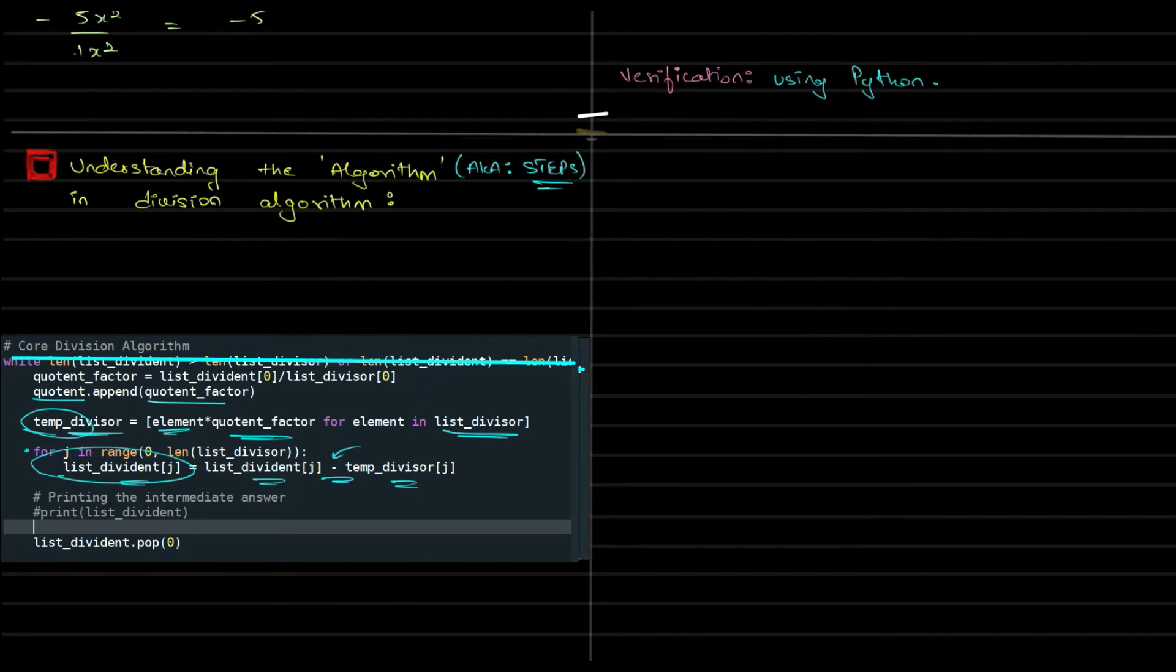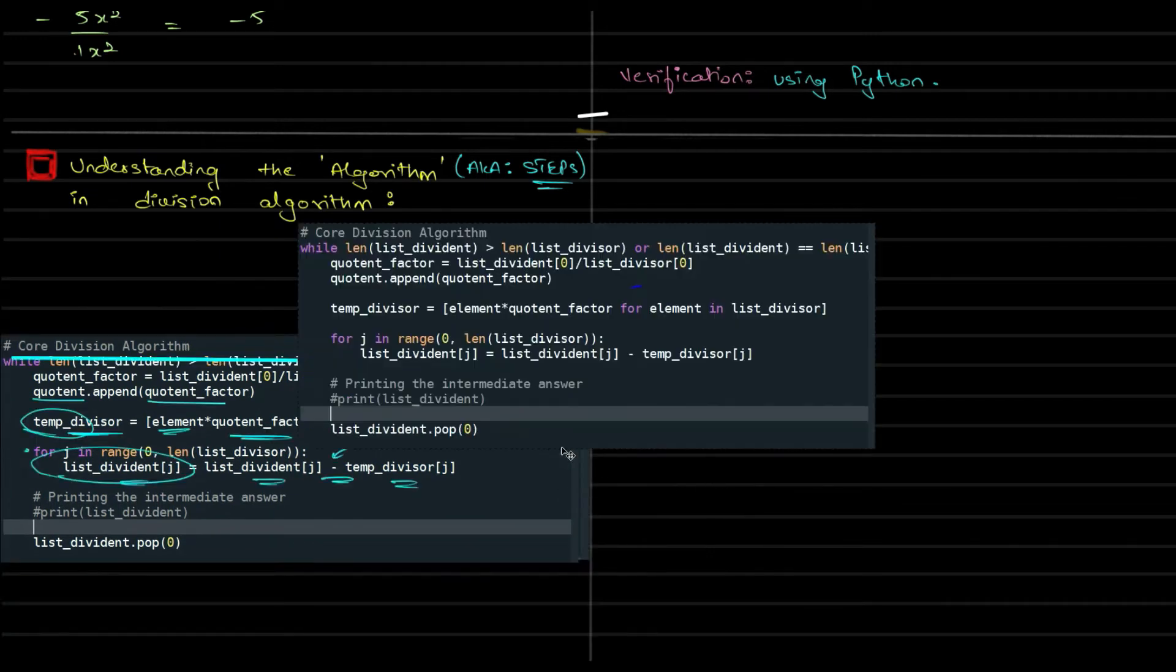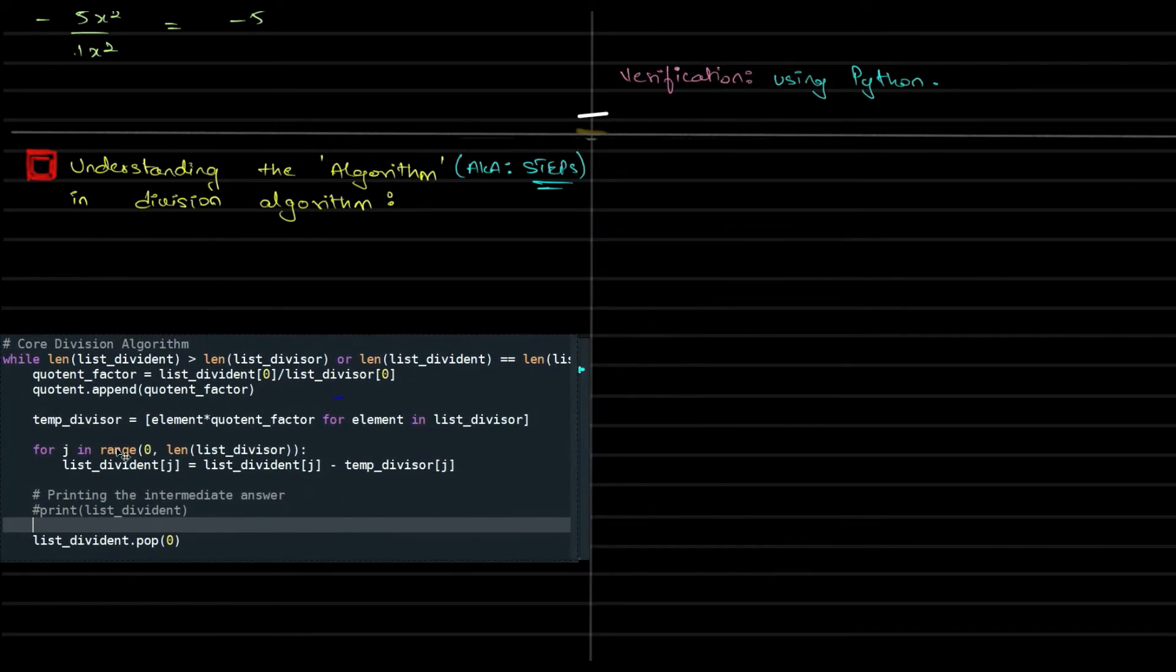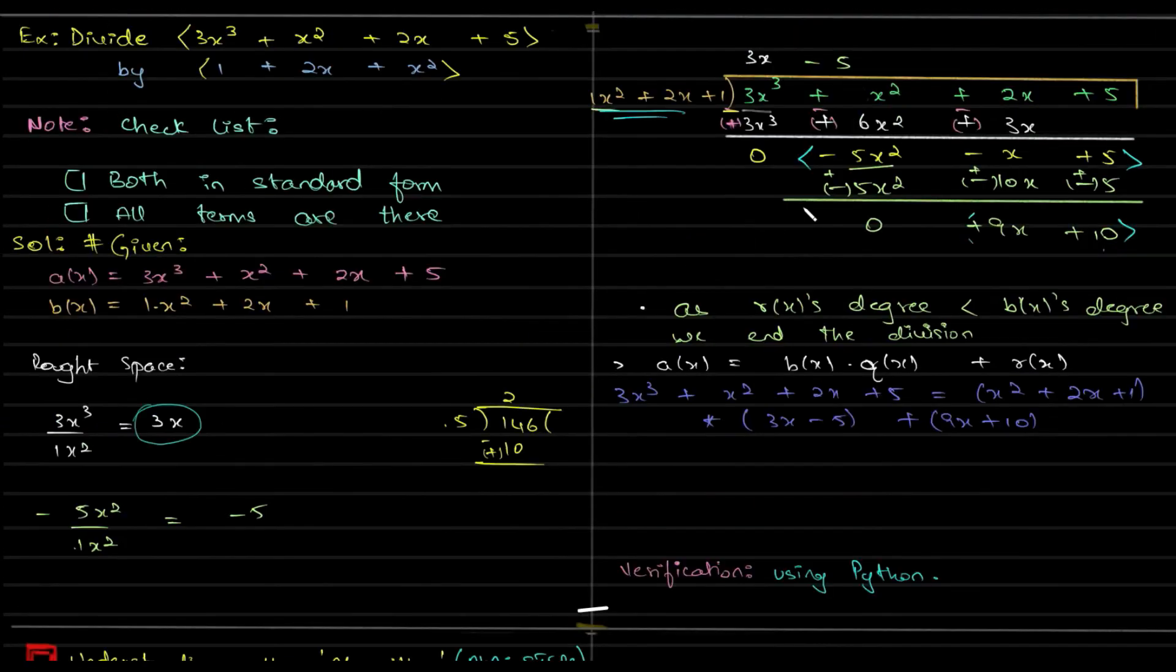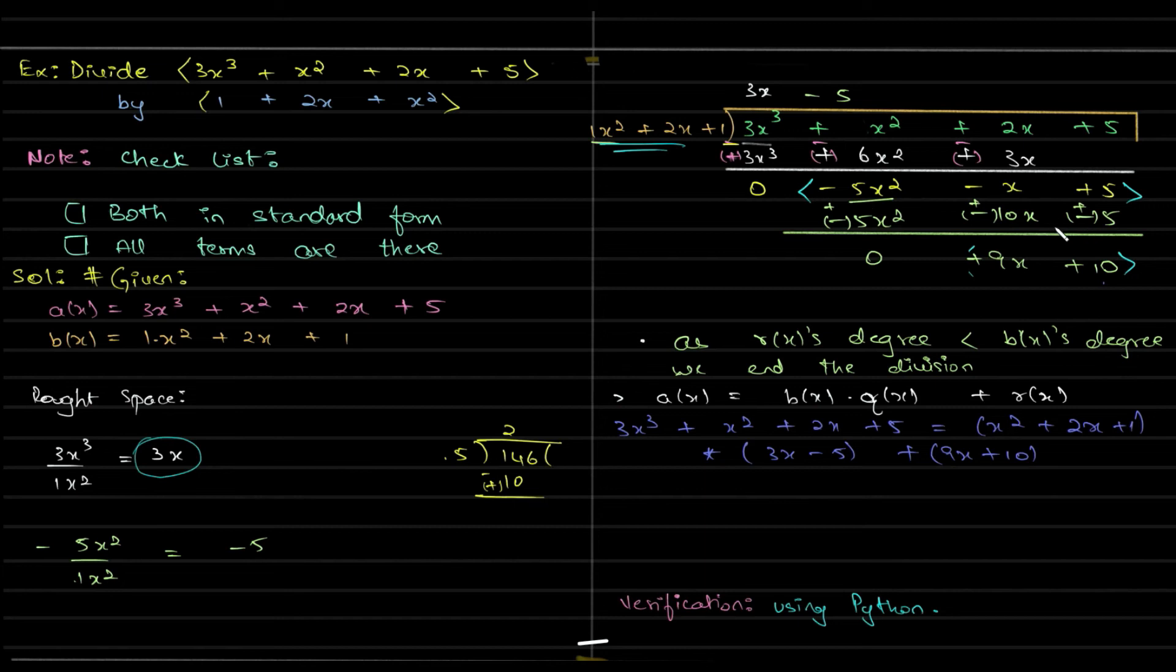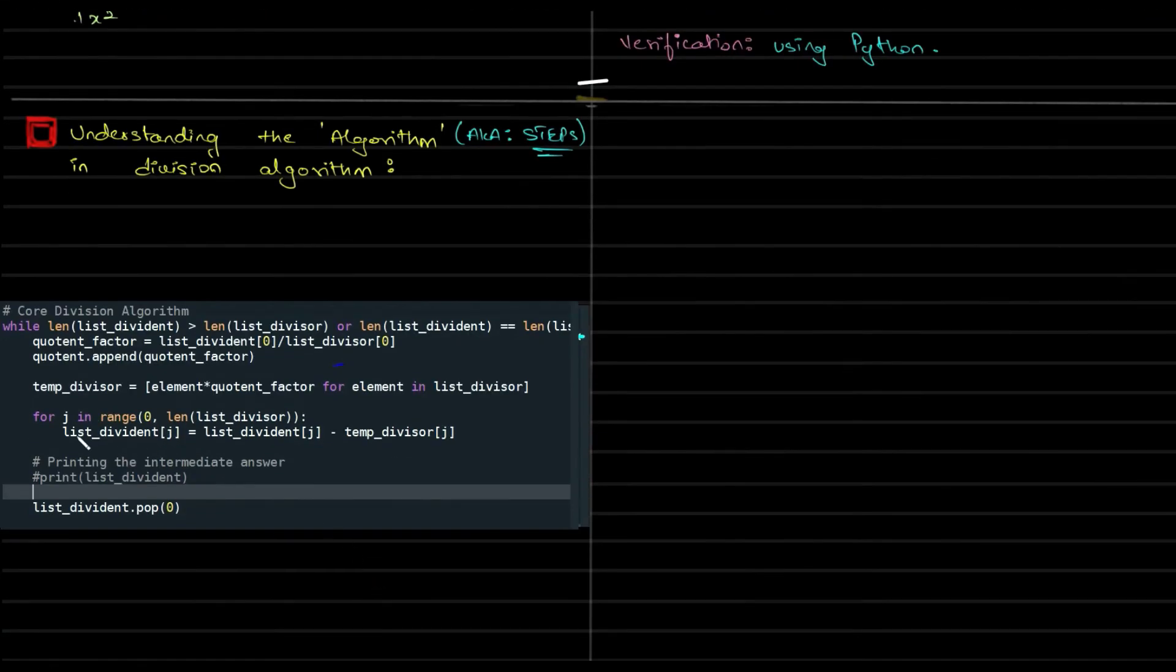While your dividend, it changes. The dividend changes. It has to change. For the process to continue, it has to change. So it became zero, so on and so forth, minus five, minus one and plus five. It changes.